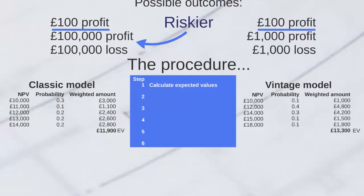We repeat the process for the vintage model, giving us an expected value of £13,300. As management accountants, if we are just looking for the most profitable project, we would select the vintage model because it has the highest expected value of £13,300. However, this section is not just about calculating the most profitable outcome — it's about calculating the risk. We still don't know which of these two models is the riskier option. If the range of potential outcomes is far greater relative to the average for the vintage model, then it will be the riskier model, and a higher expected value may not necessarily mean it's the better project.